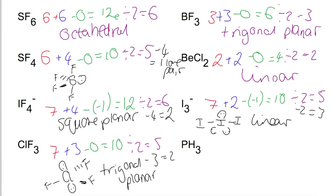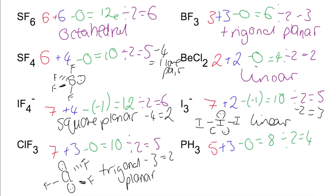The last example is PH3. Phosphorus has five electrons. We add three H's and there is no charge, giving eight electrons. Dividing by two gives four electron pairs. Taking away the three atoms attached gives one lone pair. Based on a tetrahedral with one lone pair, this is similar in shape to ammonia, so PH3 is pyramidal.